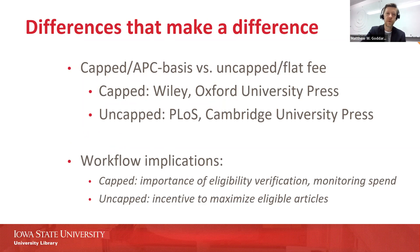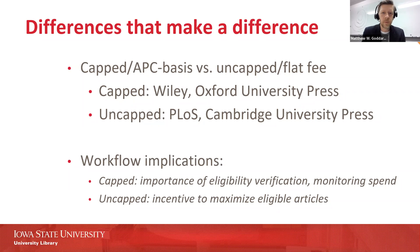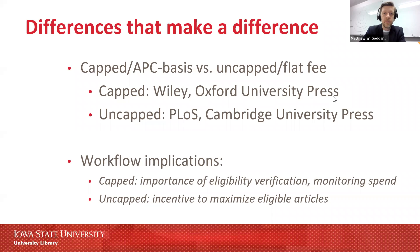Now I want to briefly go through four differences between these agreements and how they might affect our workflows. Probably the most important is whether your agreement is capped or uncapped — whether there's a scarce resource built into the agreement requiring you to look very closely at what gets published. With capped agreements, the eligibility verification step is quite important, and you'll want to monitor your spend throughout the year to make sure you don't run out of money or hit your article cap. With uncapped agreements, you have an incentive to maximize eligible articles — at the very least by skipping the eligibility verification step — and you might want to consider promoting the agreement to your researchers.